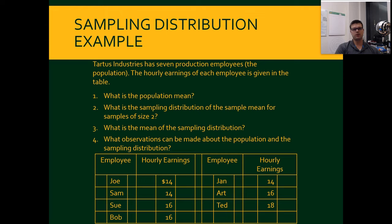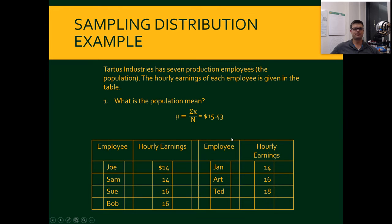The hourly earnings of each employee are given in the table. We've got 14, 14, 16, 16, 14, 16, 18 for Joe, Sam, Sue, Bob, Jan, Art, and Ted — they all have three-letter names. So what is the population mean? You sum all of the individual hourly earnings and divide by N — notice that's a capital N, which means it is a population parameter — which gives you 15.43.